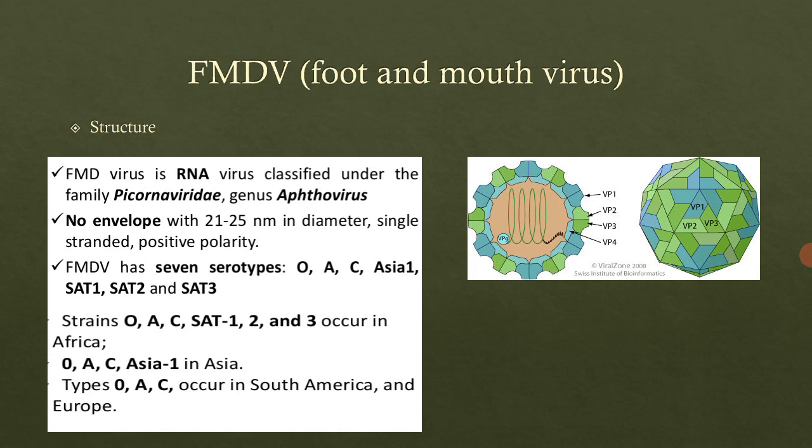The FMDV belongs to the genus Aphthovirus under family Picornaviridae. It is a non-enveloped virus — the outside is the nucleocapsid and the proteins present are the nucleocapsid proteins. The size of the virus is 21 to 25 nanometers in diameter. The genome is single-stranded, positive-sense, linear, non-segmented RNA.